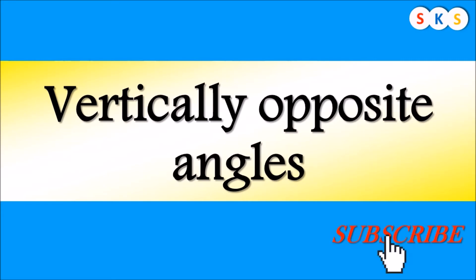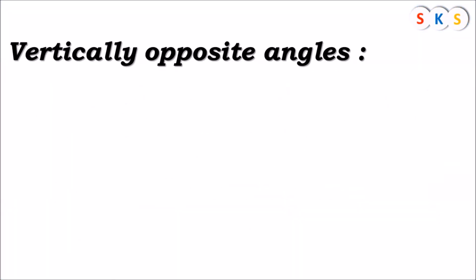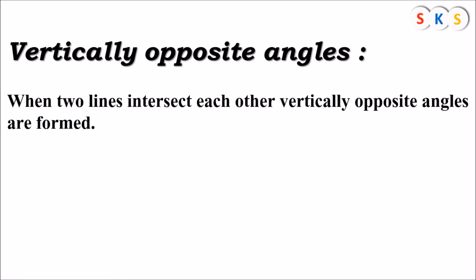What are vertically opposite angles? When two lines intersect each other, vertically opposite angles are formed. Now we will try to understand vertically opposite angles with the help of a figure.